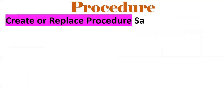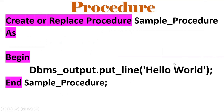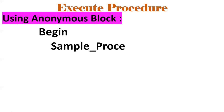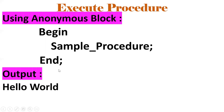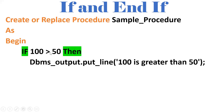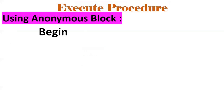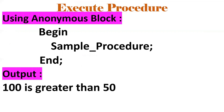You should know what a procedure is. The syntax is: CREATE OR REPLACE PROCEDURE procedure_name AS BEGIN DBMS_OUTPUT... — this is a simple hello world procedure. You can execute it using an anonymous block: BEGIN procedure_name; END; — output will be 'Hello World'. For conditional statements, use IF ... THEN ... ELSE ... END IF. For example: IF 100 > 50 THEN display '100 is greater than 50', ELSE go to the else block. Since the condition is true, it displays '100 is greater than 50'.